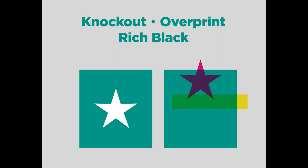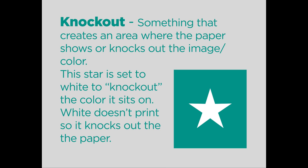Now let's talk about knockout, overprint, and rich black. A knockout is when you knock out the color or an image to the paper it sits on. Generally when we knock out something, we create a shape or put type on a background and fill it with white. White doesn't print — if you look at your printer, you have cyan, magenta, yellow, and black, but there is no white ink. White simply assumes the color of the paper. So if I have a green background and want the green to go away in the shape of a star, I create a star filled with white and nothing prints — it essentially knocks out anything below the star and looks white because that's the color of the paper.